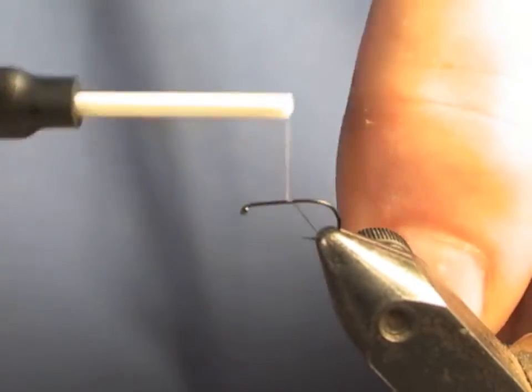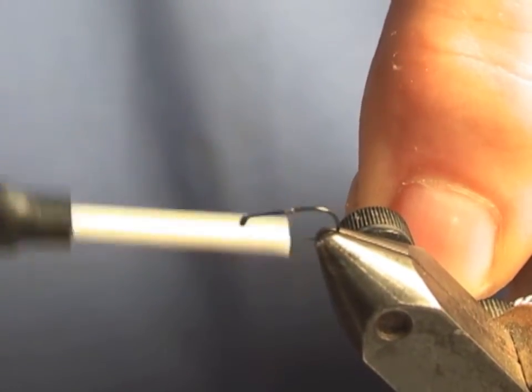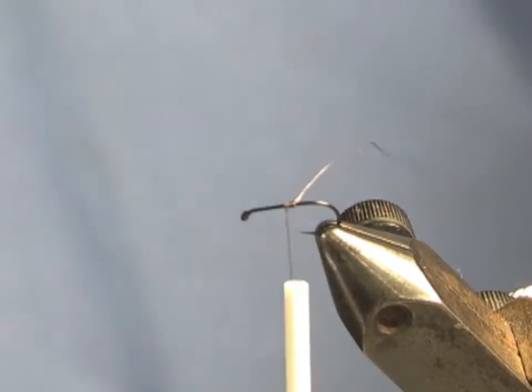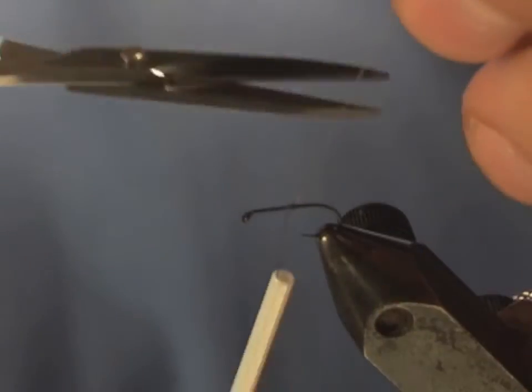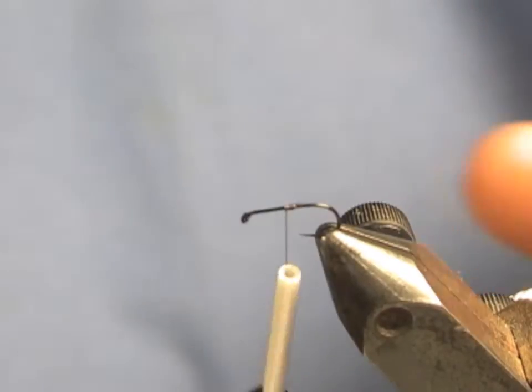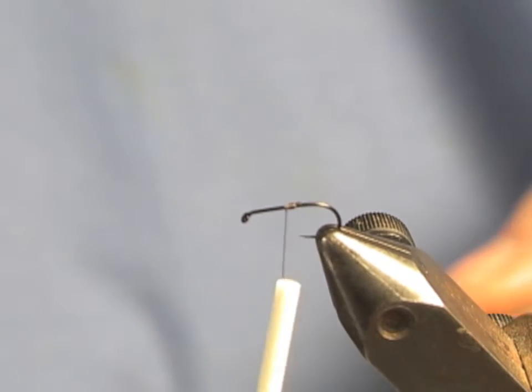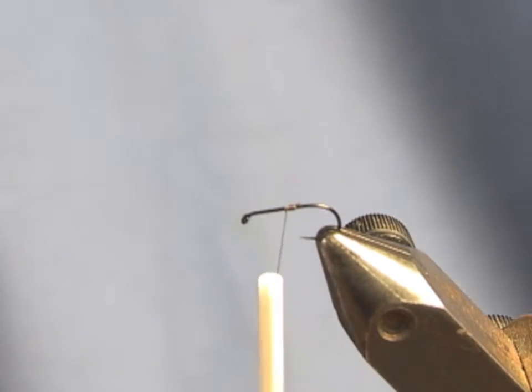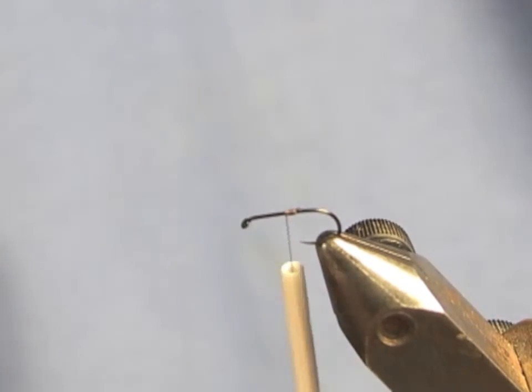I'm tying this on a size 17 hook, which is right about in the middle of the range. You can get these hooks down to size 21, which is essentially the same as a size 20 hook, slightly longer, a little bit wider gap.